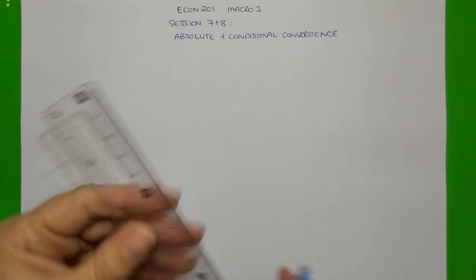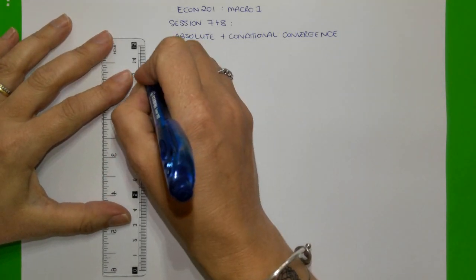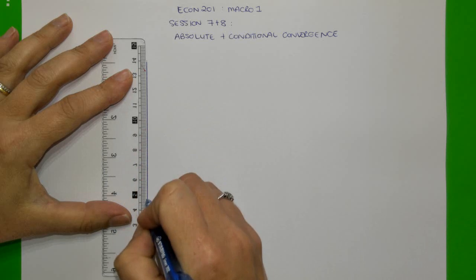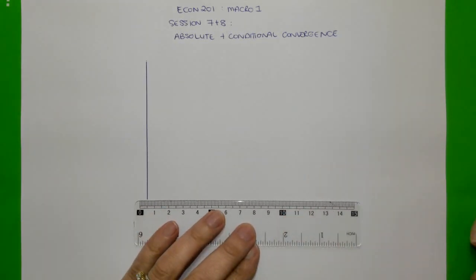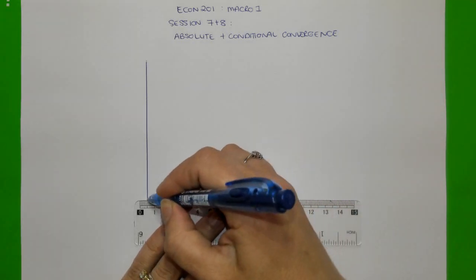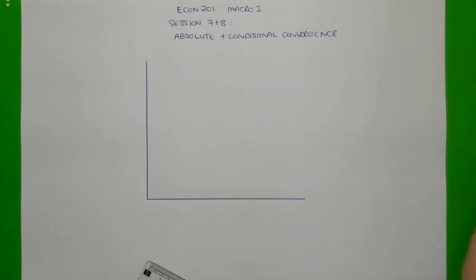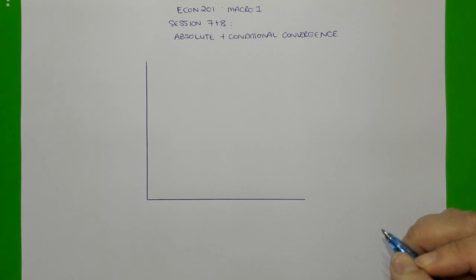The first step — and I'm going to talk as I start drawing a graph — is to recognize that convergence talks about the ability of one country to catch up to another country. We could be talking about catching up in terms of reaching the same levels of living standards, or catching up in reference to achieving the same rates of output growth.